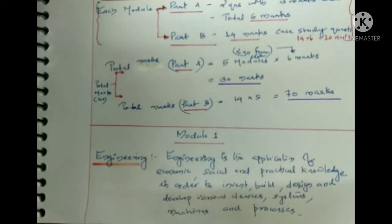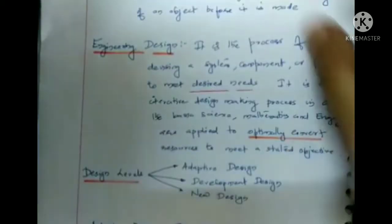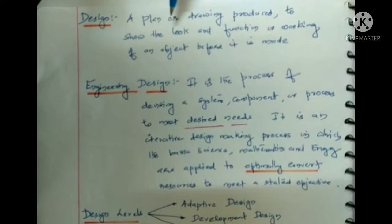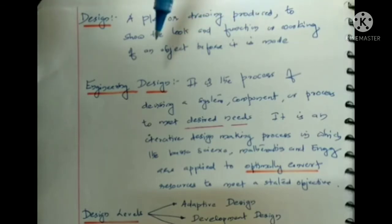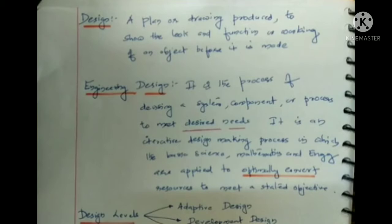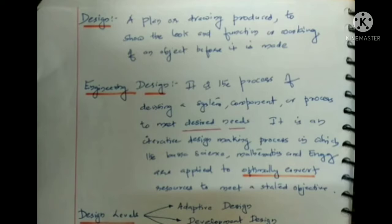A good engineer should be able to apply his knowledge to develop various kinds of systems. Design means it is a plan or drawing produced to show the look and function or working of an object before it is made. For example, if we need to build a house according to customer requirements, we will draw a plan — that is a design.